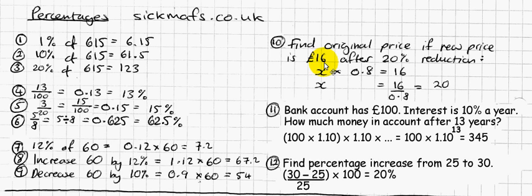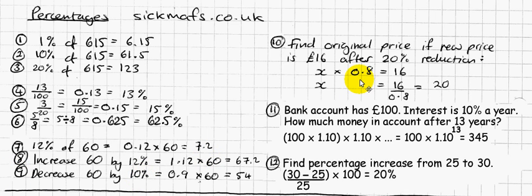So how much was the original cost? If I don't know something, in maths we call it x. If I don't know something, we call it x. And if I reduce by 20%, that means I keep 80%, building on the idea from the previous example.